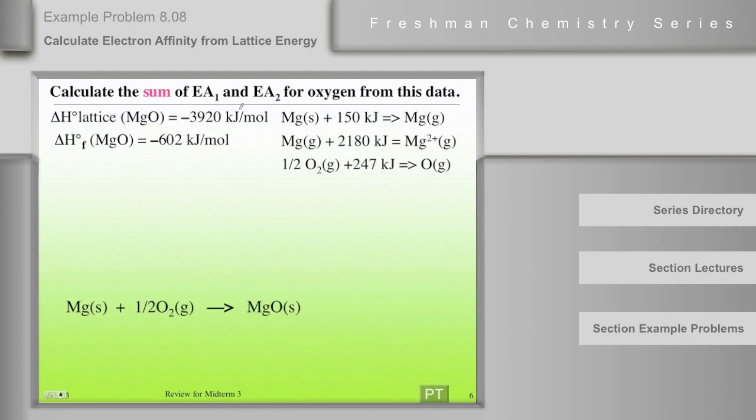I'll just show you this. Since it's magnesium oxide and oxygen comes as dioxygen, the formation equation for magnesium oxide is this. And the delta H for that equation is the heat of formation of magnesium oxide, negative 602. That's the direct reaction.